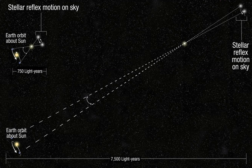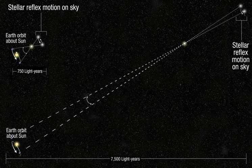Even so, Hipparcos is only able to measure parallax angles for stars up to about 1,600 light-years away, a little more than 1% of the diameter of the Milky Way galaxy. The European Space Agency's Gaia mission, launched in December 2013, will be able to measure parallax angles to an accuracy of 10 microarcseconds, thus mapping nearby stars and potentially planets up to a distance of tens of thousands of light-years from Earth.